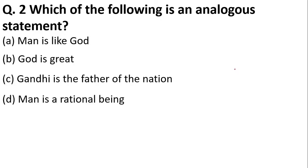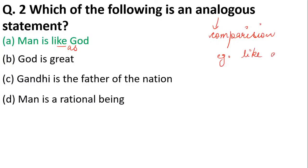Which of the following is an analogous statement? Options: man is like god; god is great; Gandhi is the father of the nation; man is a rational being. The correct answer is option A. Wherever you use words like 'as', 'like', or comparisons are made, those statements are analogous. For example, 'building is as high as a mountain' — the word 'as' makes it an analogous statement.